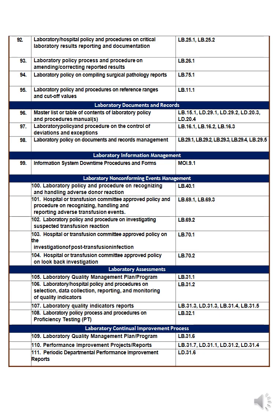Number ninety-four is the laboratory policy on compiling surgical pathology reports, which is related to histopathology and will be discussed in another presentation. Number ninety-five is the laboratory policy and procedure on reference ranges and cutoff values — define the reference ranges for results and the cutoff values inside your policy, and train staff on them.